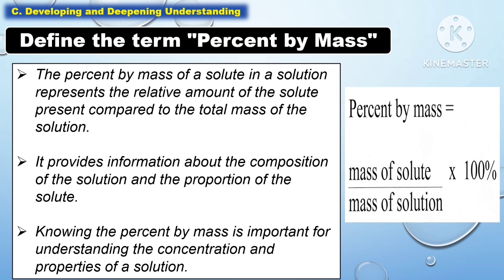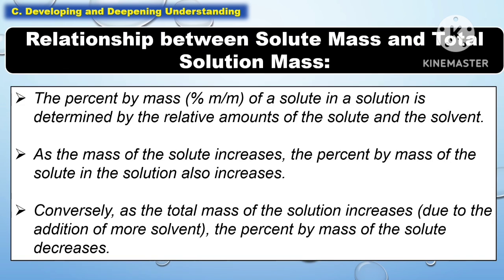Knowing the percent by mass is important for understanding the concentration and properties of a solution. The percent by mass of the solute is determined by the relative amounts of the solute and the solvent. As the mass of the solute increases, the percent by mass also increases. Conversely, as the total mass of the solution increases due to the addition of more solvent, the percent by mass of the solute decreases.